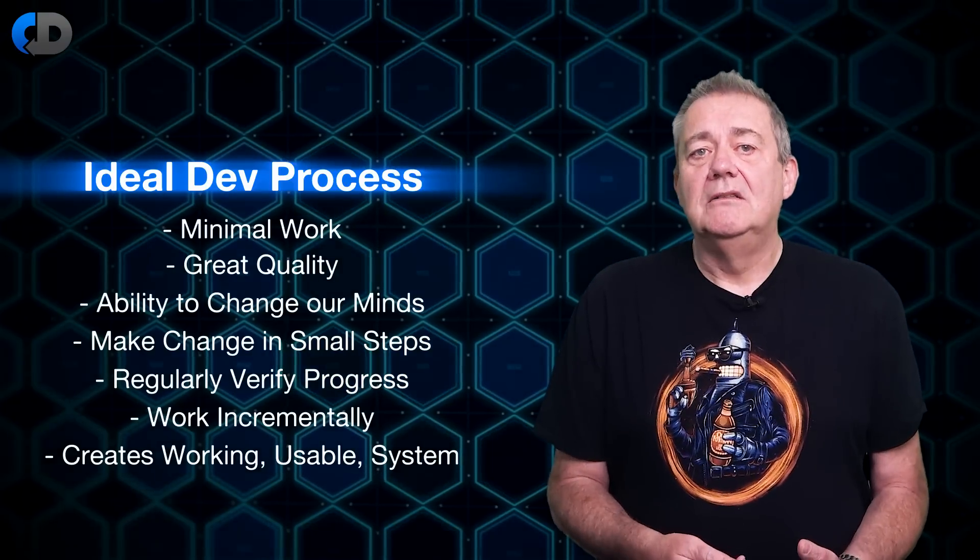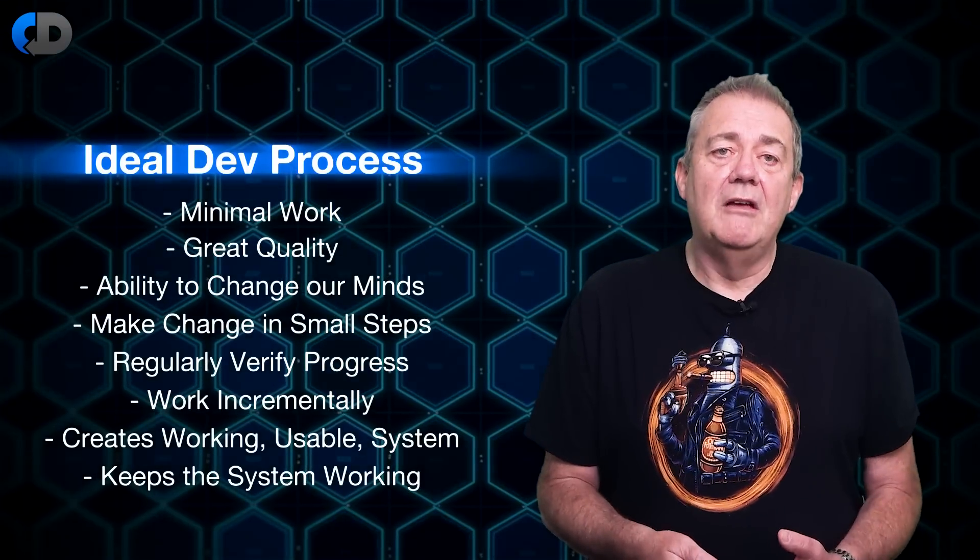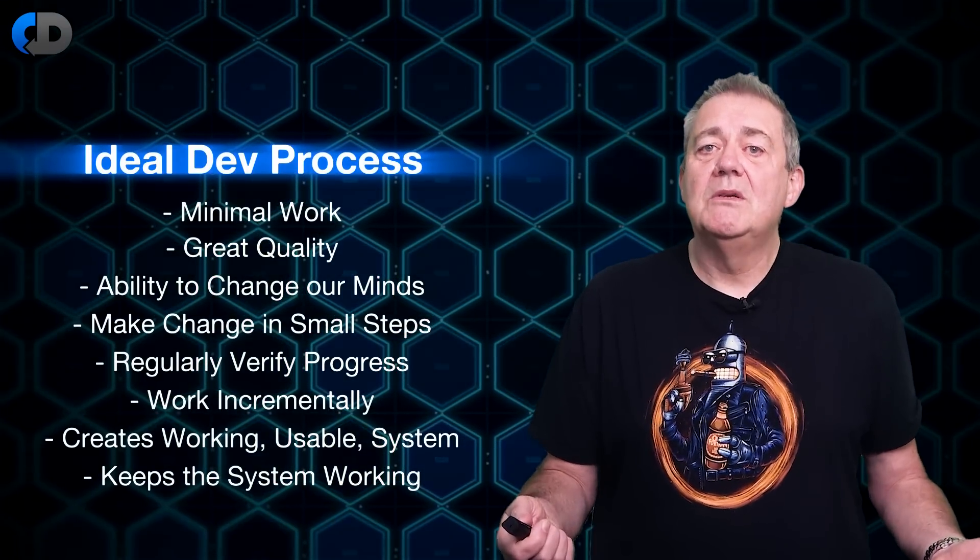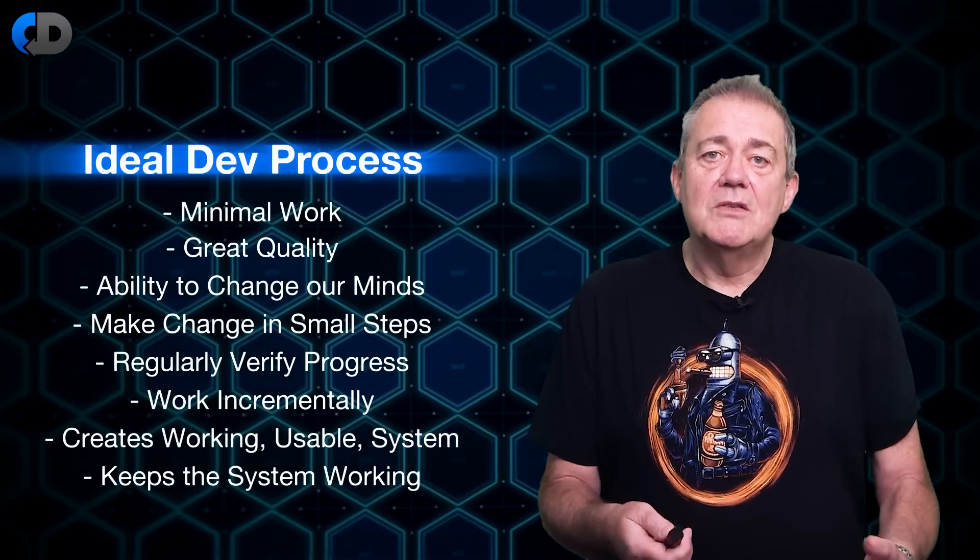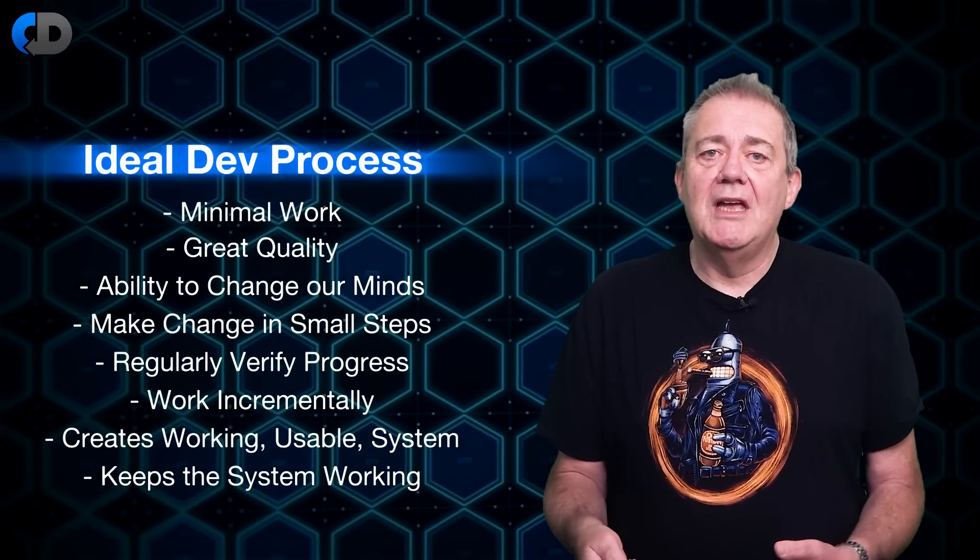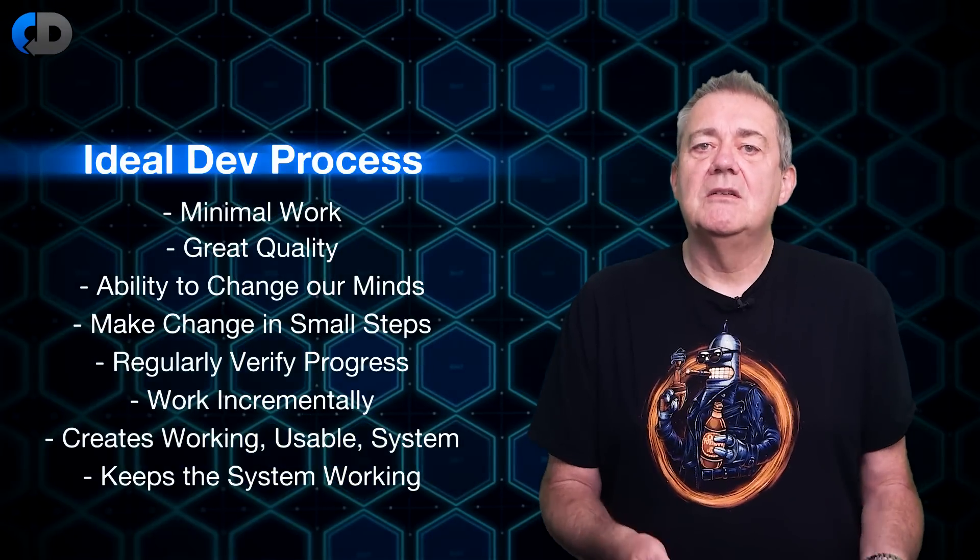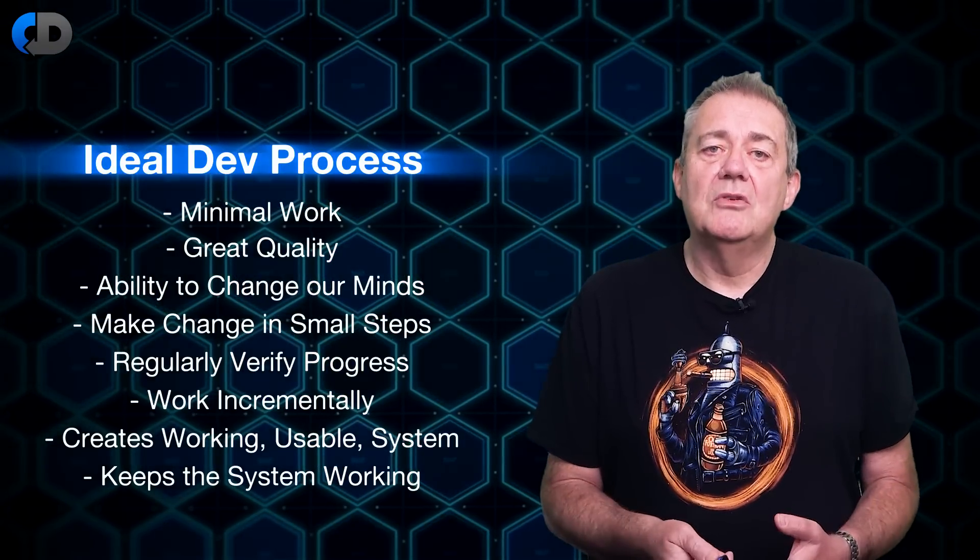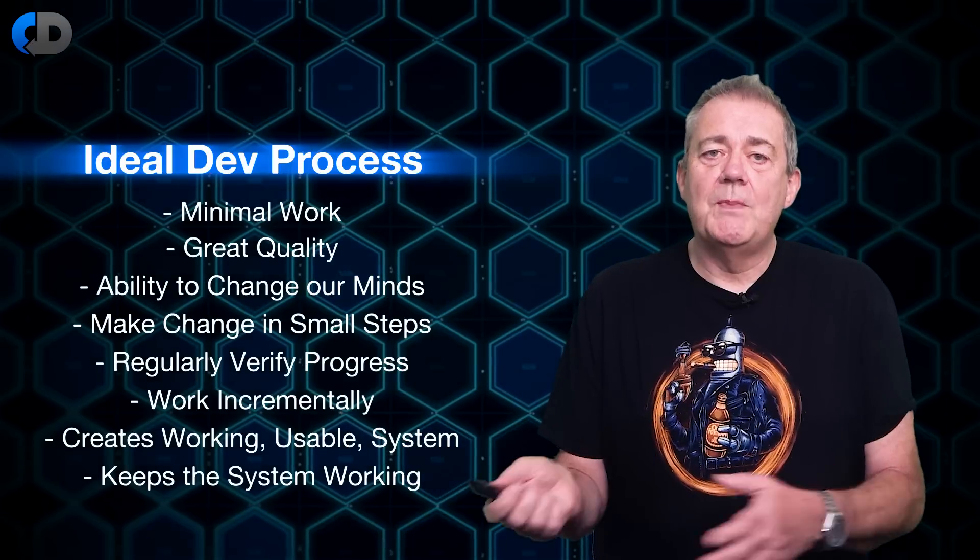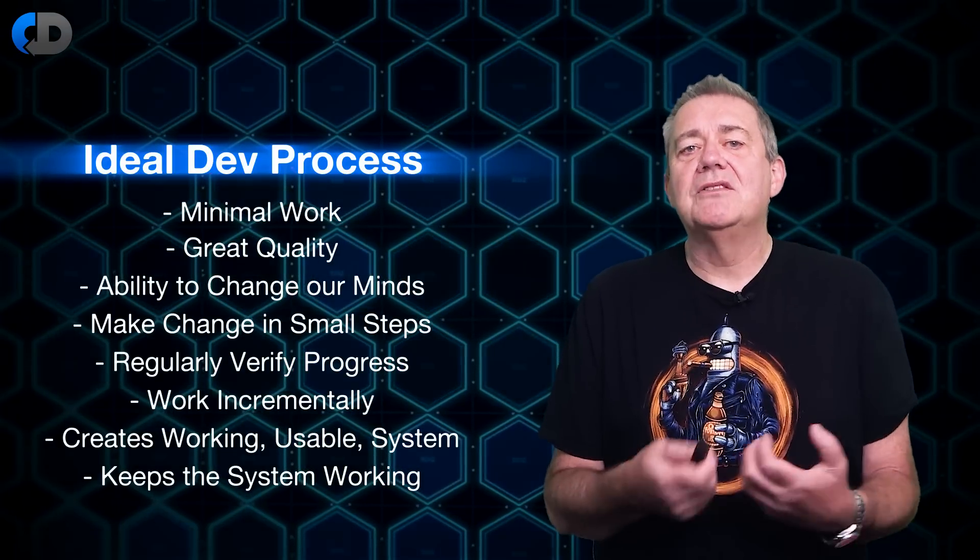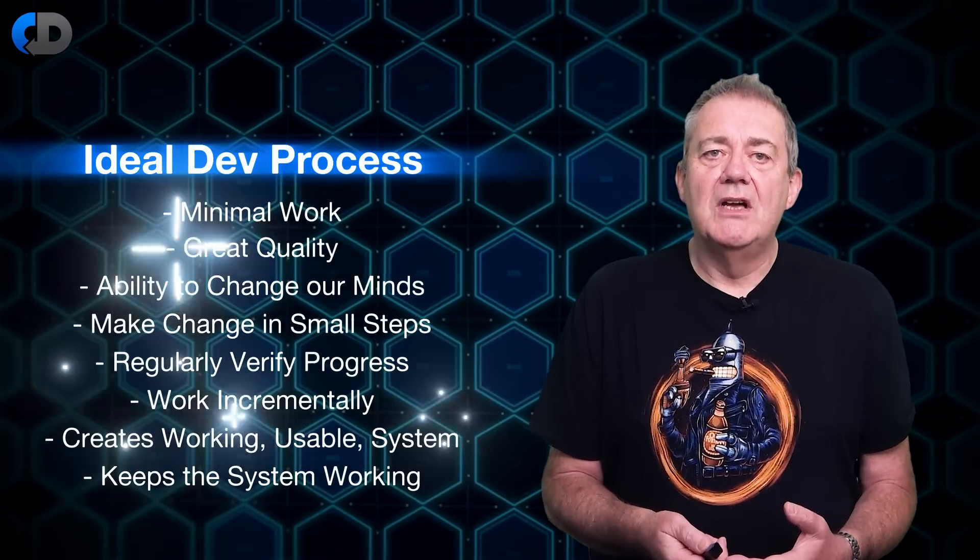The next ideal in our ideal model is that you keep the system working all the time. After all why would you want to do anything else? It's obviously better that it's working than not. This means that after every small change we could, if we chose to, release our changes into production ideally with no extra work. Remember we're talking about ideals here so suspend any disbelief. So now let's start thinking what it would take to approach these kinds of ideals.